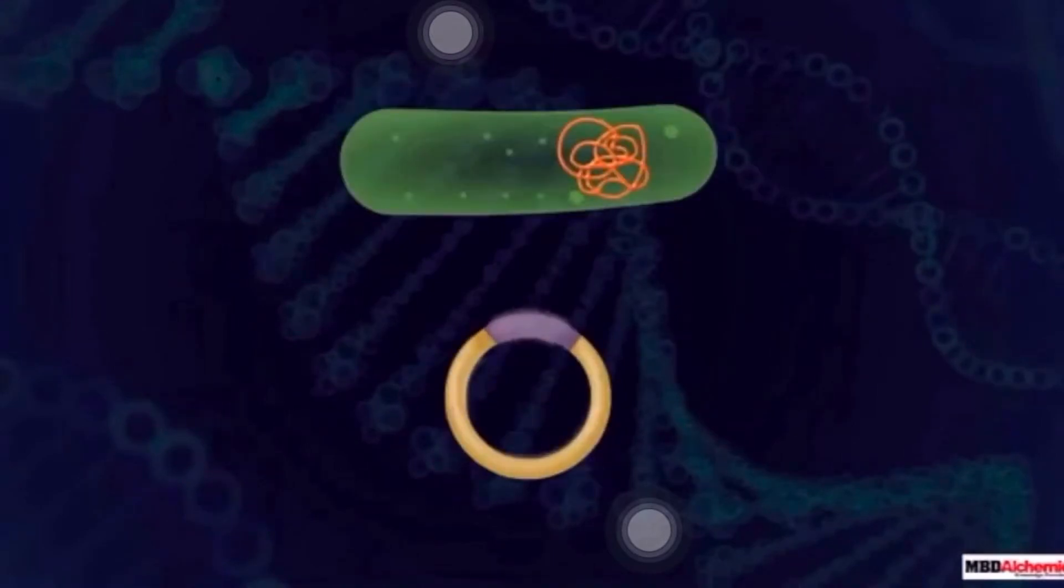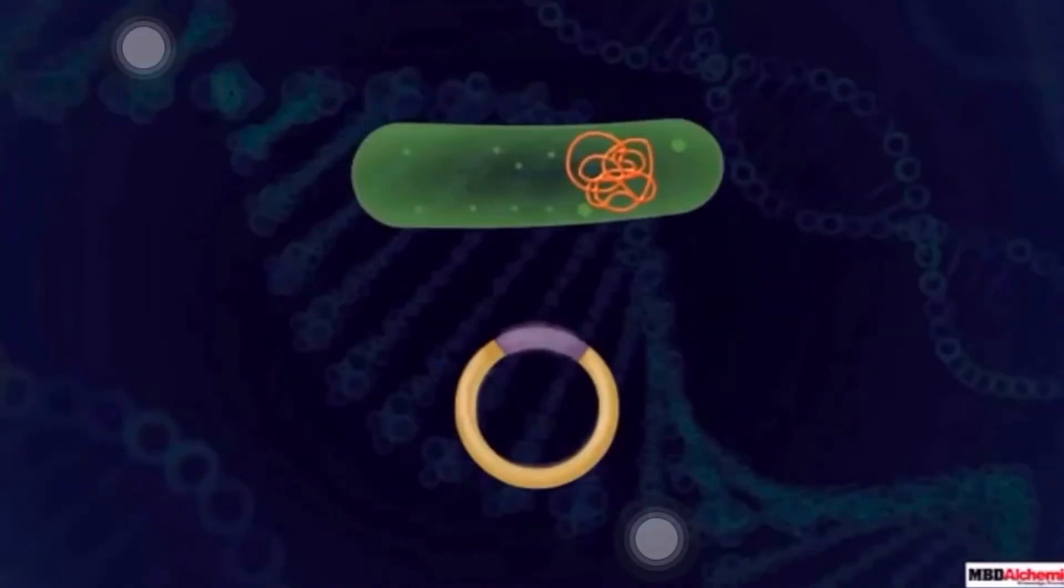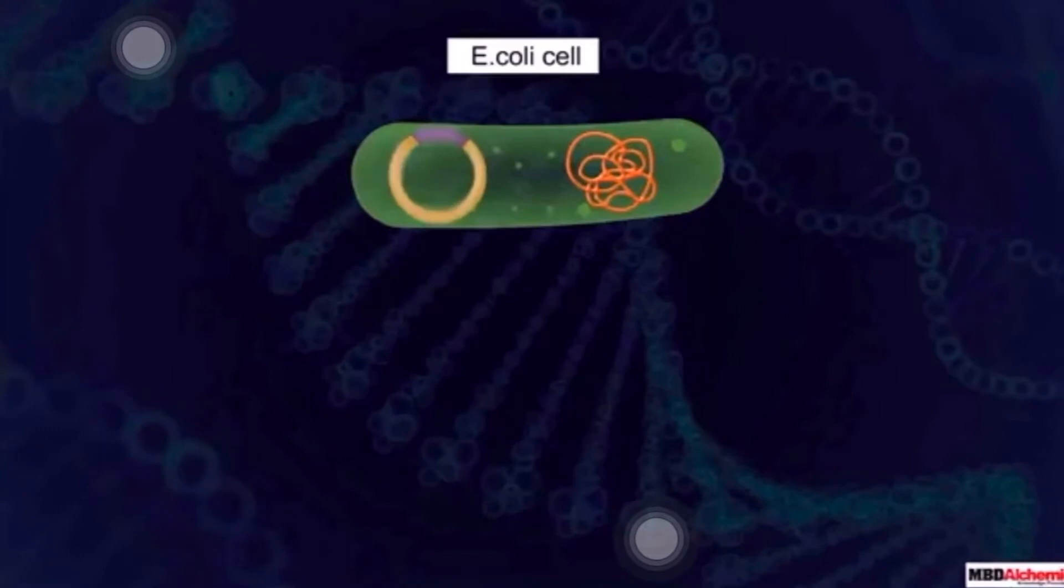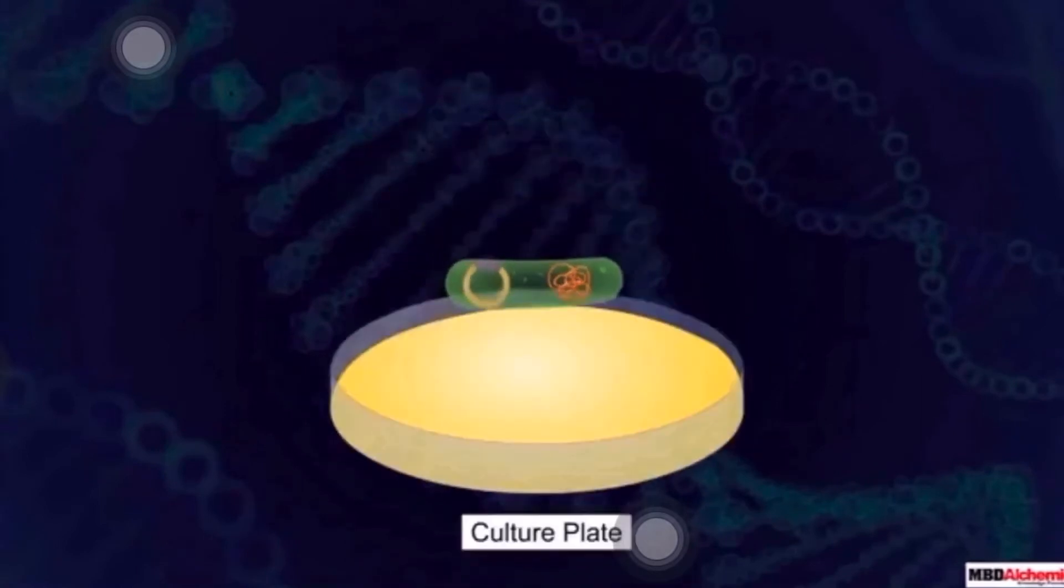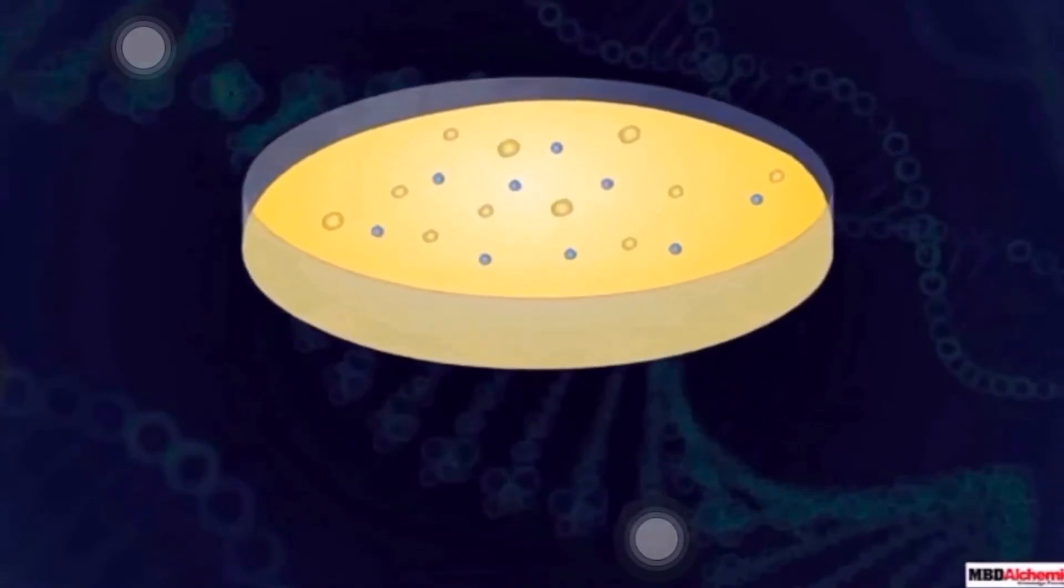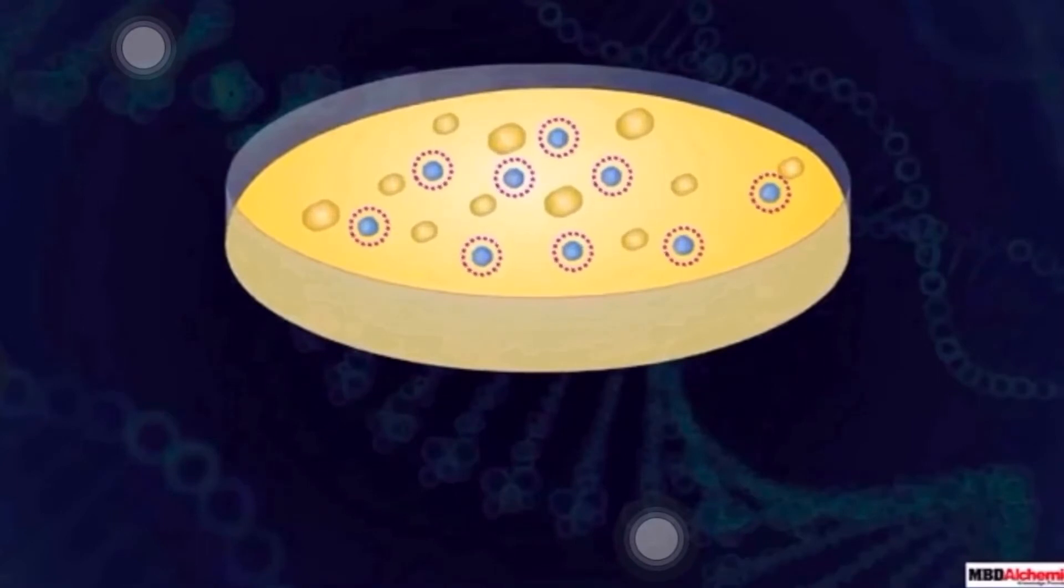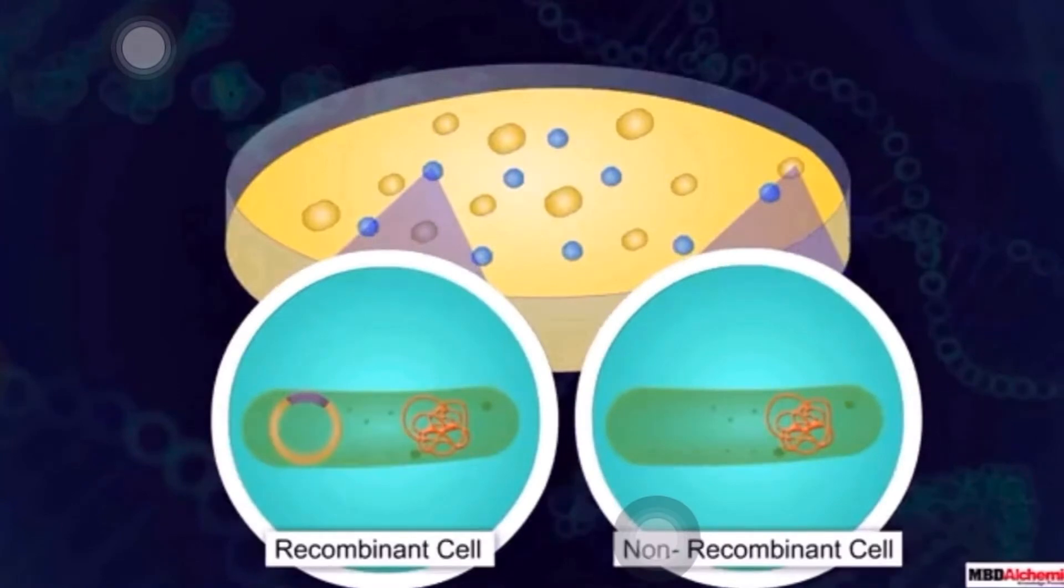For example, the target gene is ampicillin resistance gene. These ampicillin resistance gene along with the vector is inserted into the host E. coli cells. On doing so, E. coli becomes resistant to ampicillin. And when they are transferred to culture plate that contains ampicillin as a medium, only E. coli cells that are resistant to ampicillin will grow. And we can easily use this method to identify which cells are recombinant.